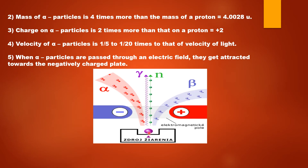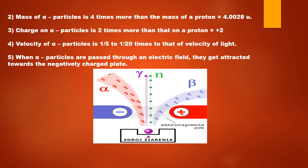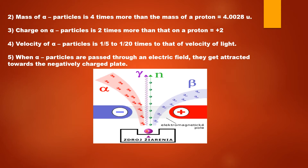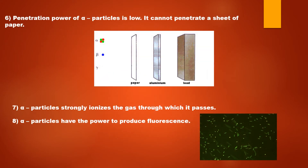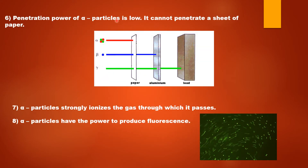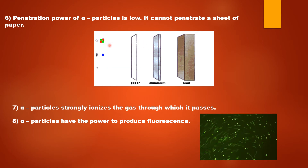When alpha particles are passed through an electric field — here you can see a positively charged plate and a negatively charged plate with an electric field set up — the radiations coming out from the radioactive substances pass through this electric field. When alpha particles are passed through an electric field, they get deflected towards the negatively charged plate. The penetration power of alpha particles is very low — alpha particles cannot even penetrate a sheet of paper.